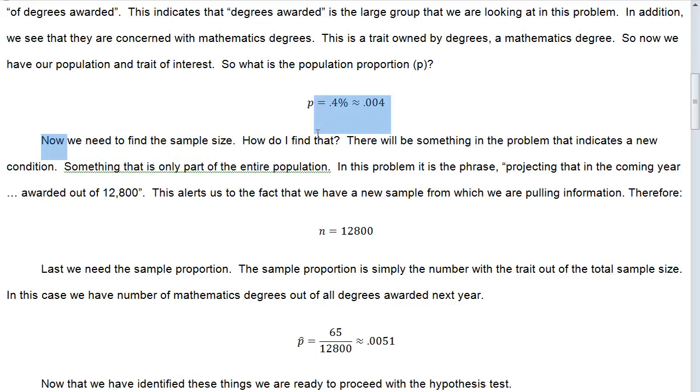Now we need to find the sample size. There will be something in the problem that indicates a new condition, something that is only part of the entire population. In this problem, it is in the phrase 'projecting that in the coming year, awarded out of 12,800.' This alerts us to the fact that we have a new sample. Our N for sample size is 12,800.